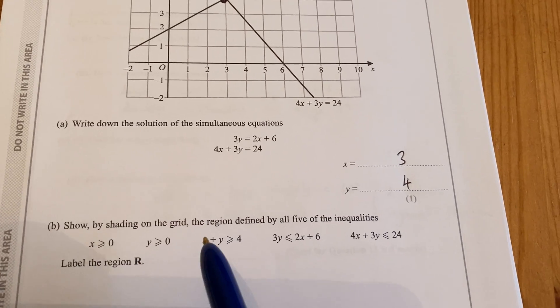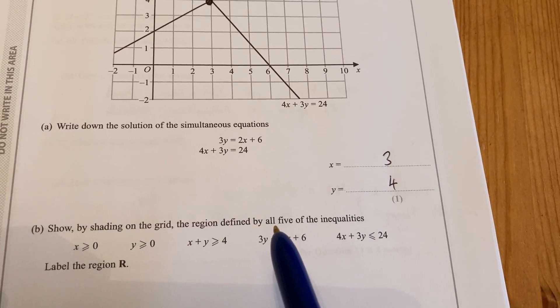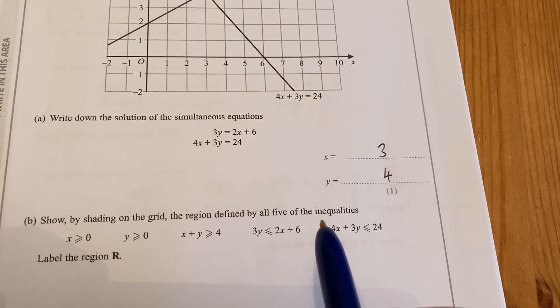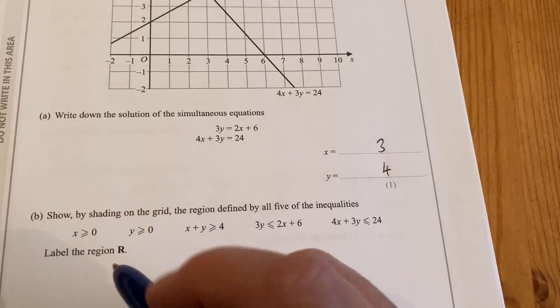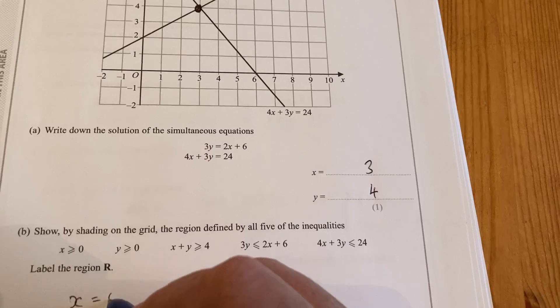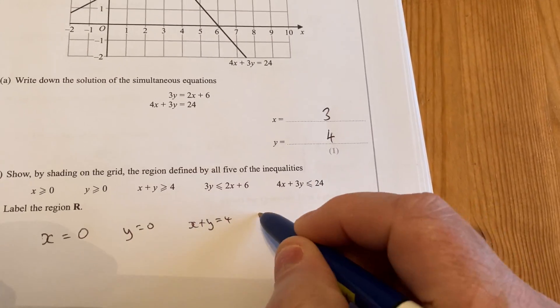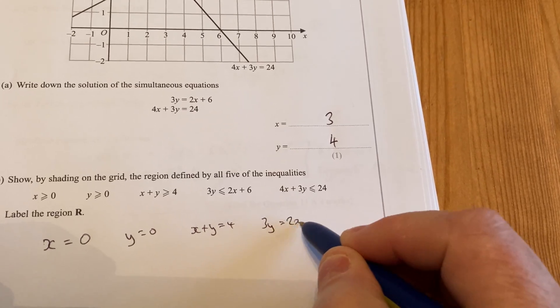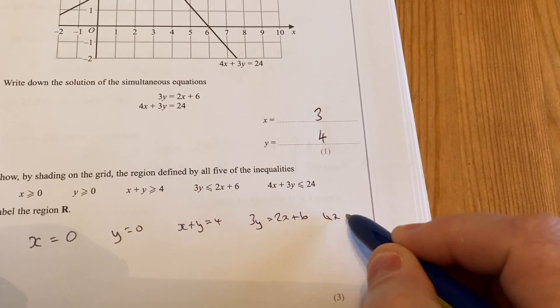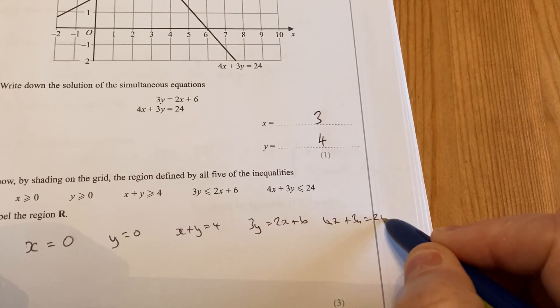Part B. Show by shading on the grid the region defined by all five of the inequalities. Now, firstly, we need the lines x equals 0, y equals 0, x plus y equals 4, 3y equals 2x plus 6, 4x plus 3y equals 24.